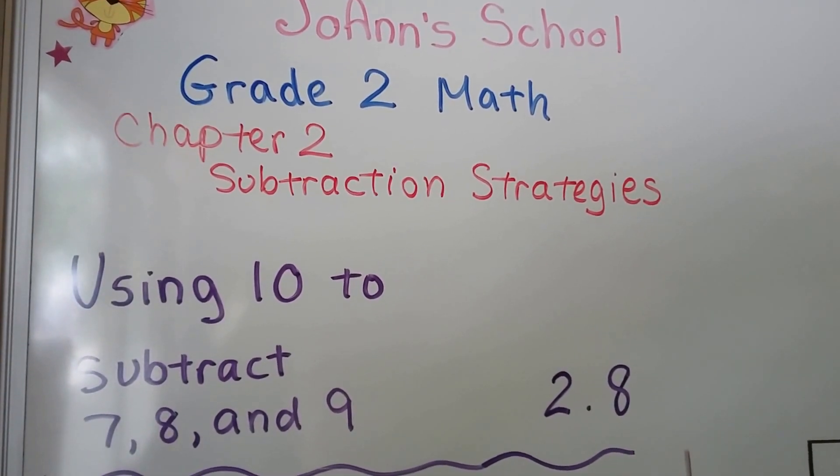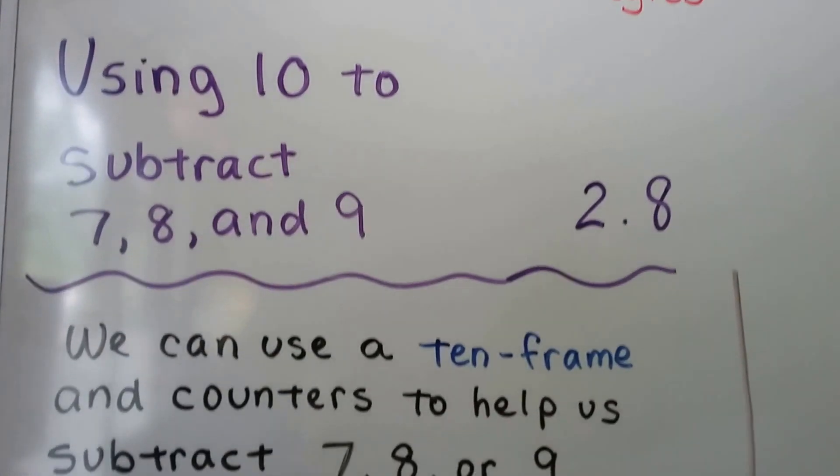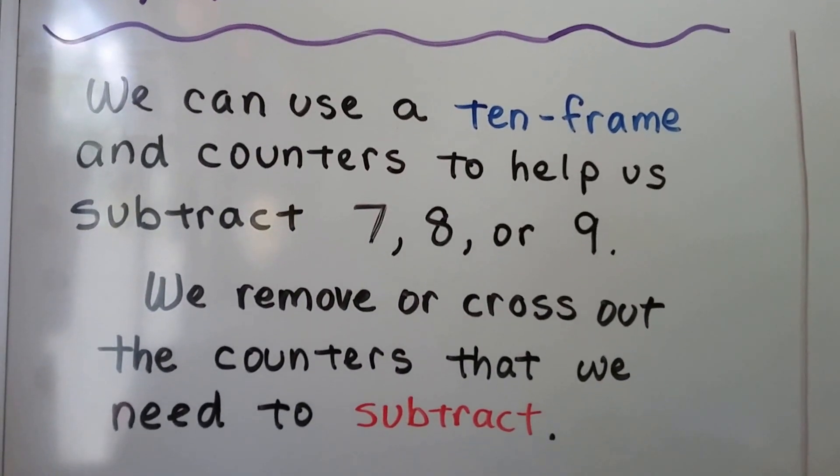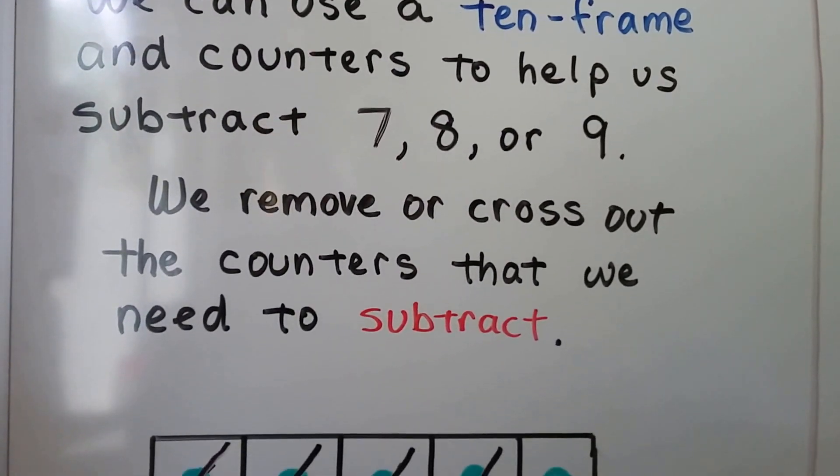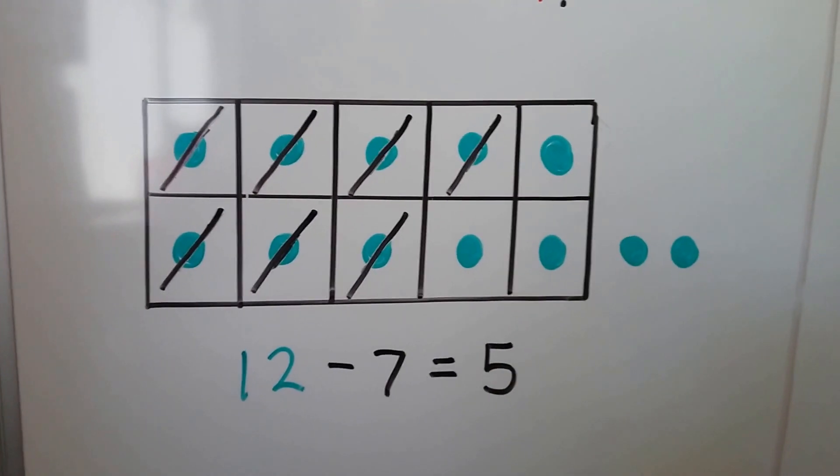Using 10 to subtract 7, 8, and 9, we can use a 10 frame and counters to help us subtract. We remove or cross out the counters that we need to subtract. So here we have...